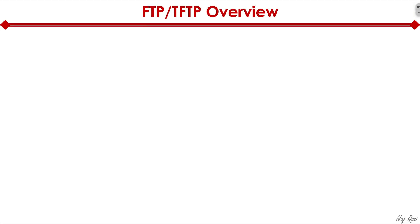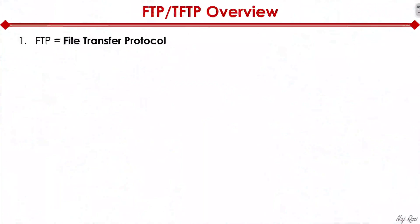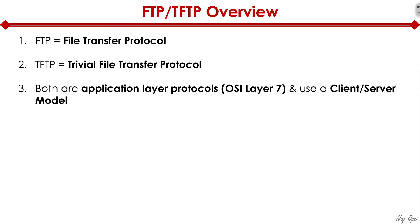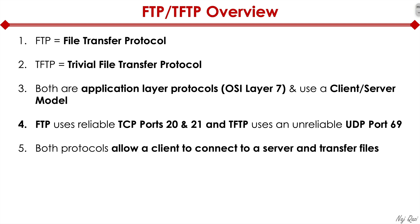FTP stands for File Transfer Protocol and TFTP stands for Trivial File Transfer Protocol. The keyword 'trivial' means it's a lightweight version of the FTP protocol. Both are application layer protocols that live on layer 7 of the OSI model and operate on the client-server model. FTP is a reliable protocol using TCP ports 20 and 21, whereas TFTP is an unreliable protocol using UDP port 69. The purpose of both protocols is to allow a client to connect to a server for file transfer.